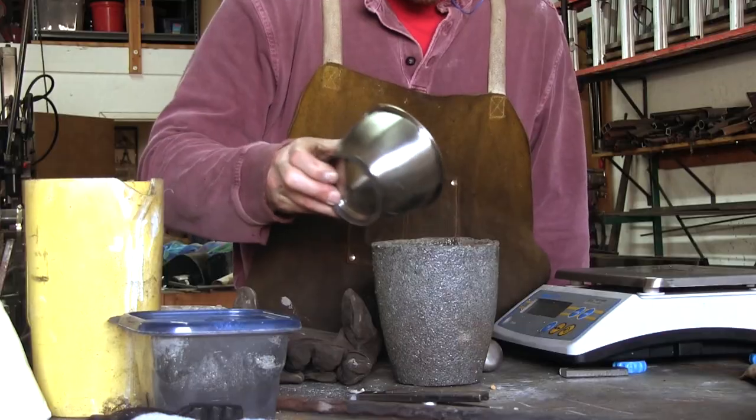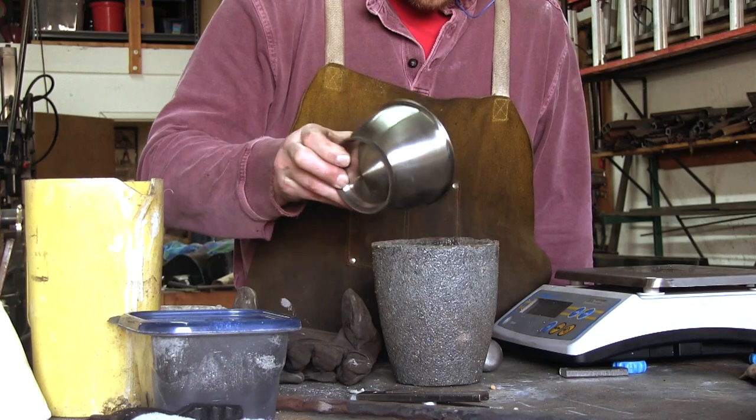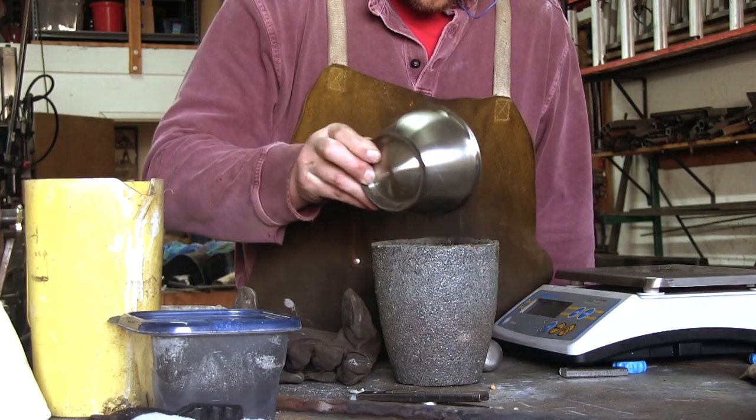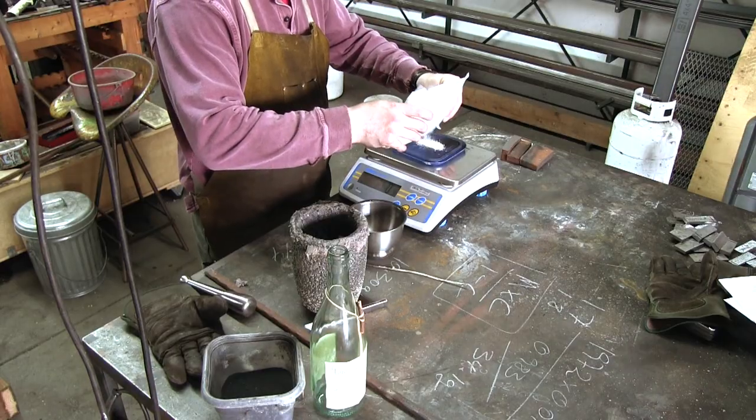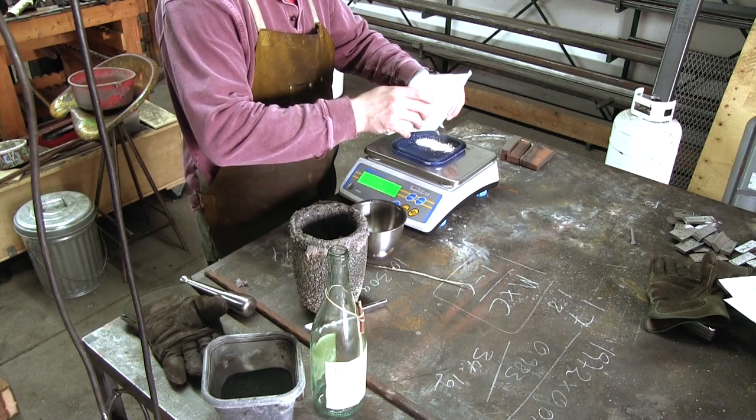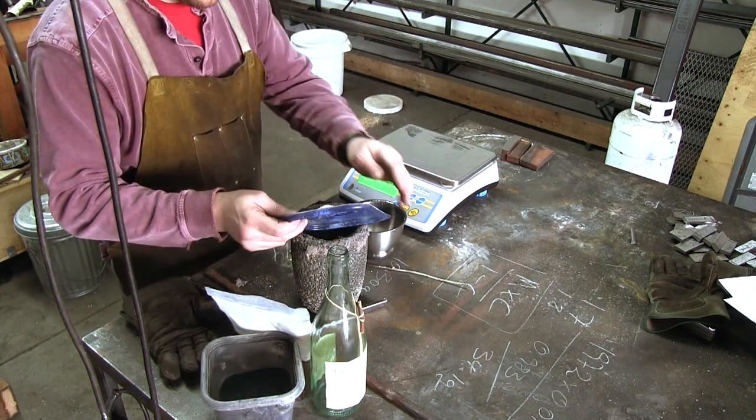Wootz steel was renowned for the watered steel sword blades that could be forged from it. The appearance of watered steel is due to carbides segregating along impurities caused by alloying elements such as vanadium.